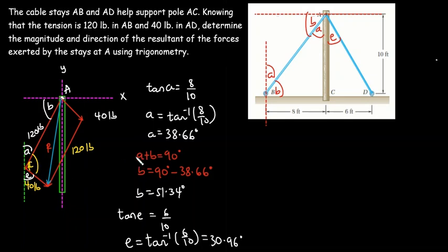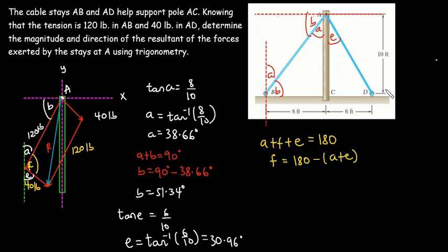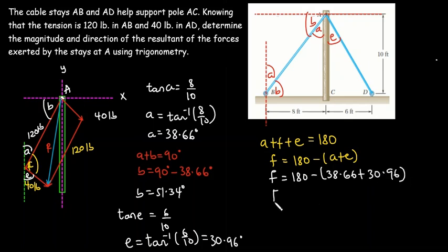The sum of angles A, F, and E equals 180 degrees. So angle F equals 180 minus (A + E), which is 180 minus 38.66 minus 30.96, giving us a value of 110.38 degrees.